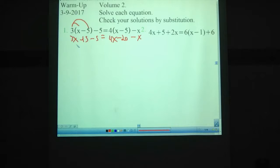-15 - 5 becomes 3x - 20. 4x - x, that's 3x, still -20. And then we get rid of the 3x from both sides, giving you guys -20 = -20. That means we have infinitely many solutions.